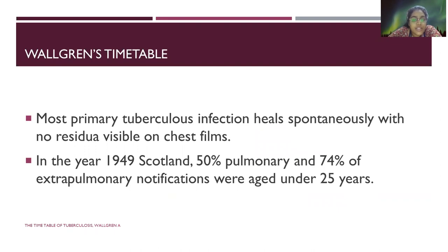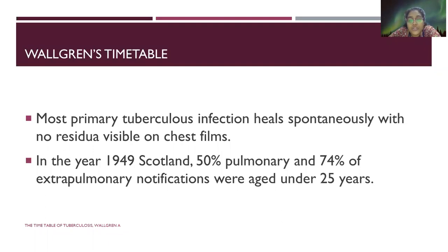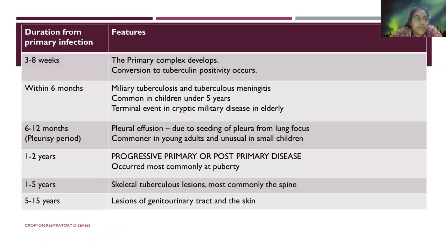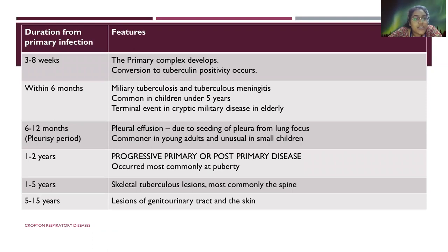In the year 1949, Walvin noticed that 50% of the pulmonary and 74% of the extra-pulmonary notifications were mostly aged under 25 years. This is Walvin's timetable where duration from primary infection and features have been explained.